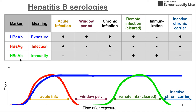On the bottom, we have a plot of these serological markers over time after a person is exposed, with the three markers in the same colors as the table above. It's important to note that this chart is for a person who had an acute infection that did clear, so not all six conditions listed in the table can be represented on this chart.